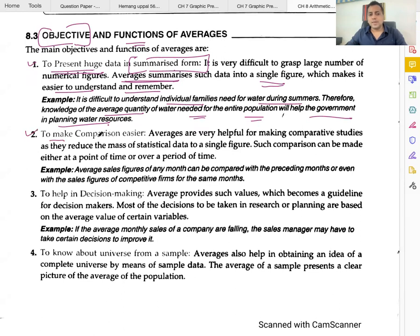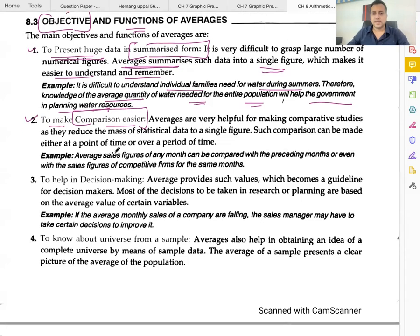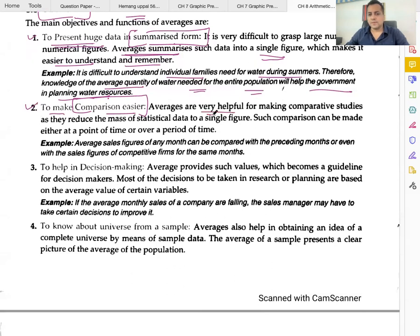Function two: to make comparison easier. Averages are very helpful for making comparative studies as they reduce the mass of statistical data to a single figure. Such comparison can be made either at a point of time or over a period of time.